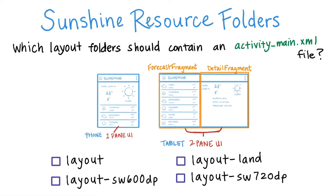So back to our quiz. We need to define the activity_main.xml file in our base layout folder so that we can accomplish this layout on the phone. This layout applies to both phone portrait and landscape, so we don't need a special version of the layout in the layout-land folder.